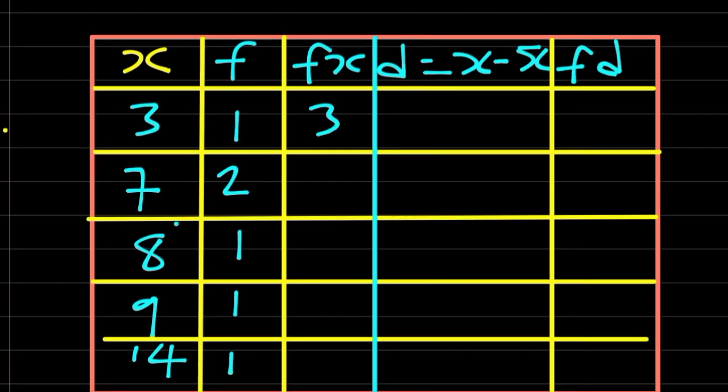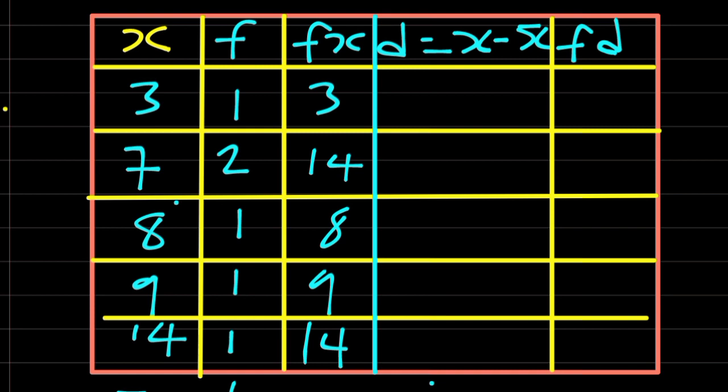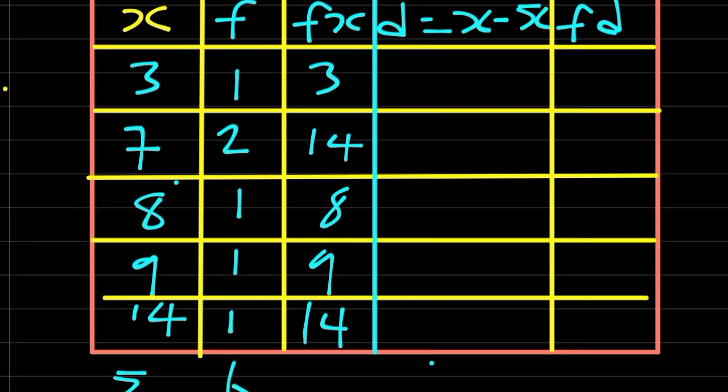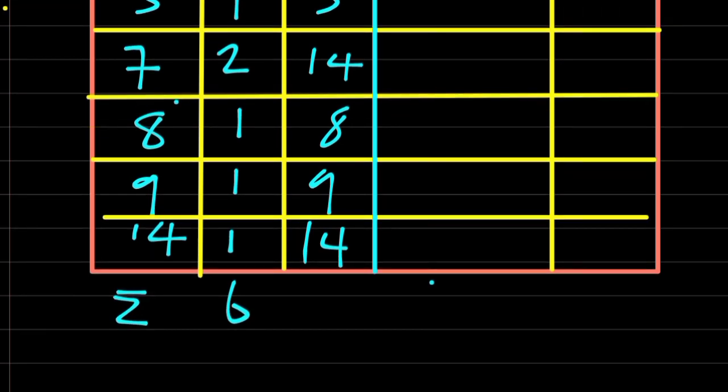3 times 1 is 3. We are going to add the whole of f of x together, that is this column. 3 plus 14, it gives us 17. 17 plus 8, it gives them 25. 25 plus 9, it gives 34. 34 plus 14, it gives them 48. 48.